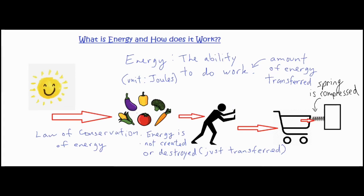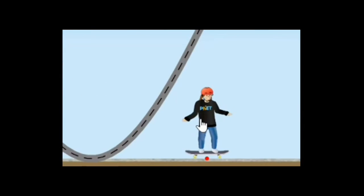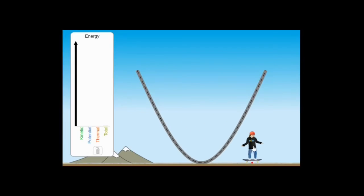Now to end off our video, we're going to take a look at a simulation by Colorado PhET. In this simulation, we have a system of things, which is the person and the skateboard, the earth and the ramp. And when you lift this person up, you're giving the system a total amount of energy, which then is transformed into different types.